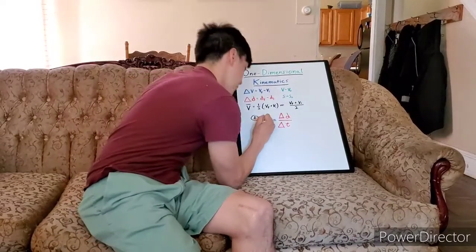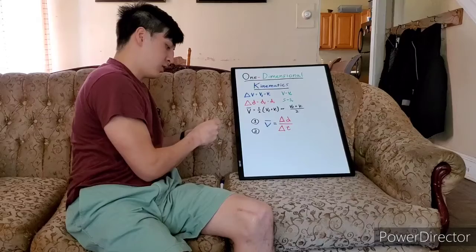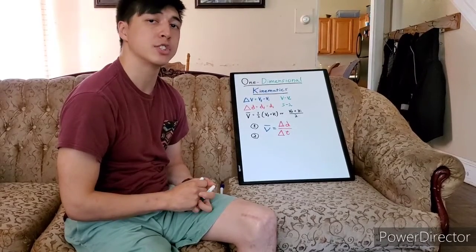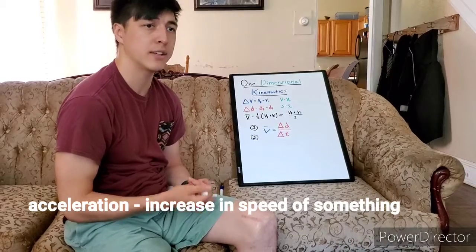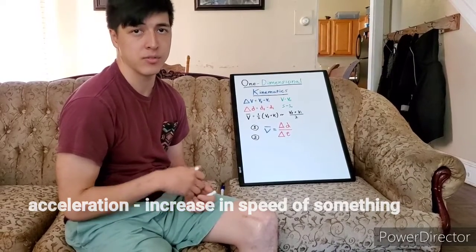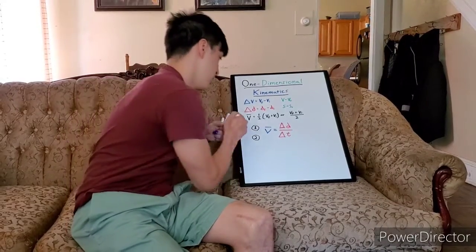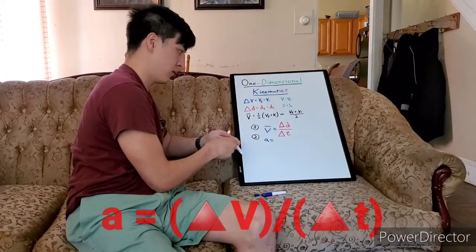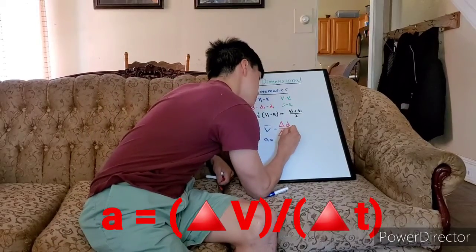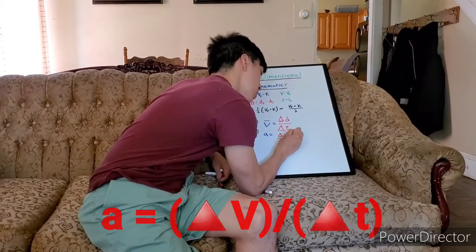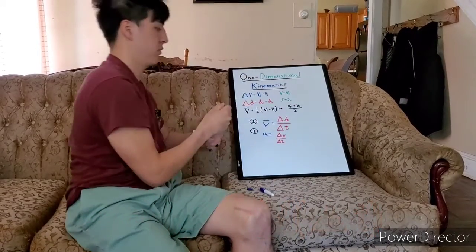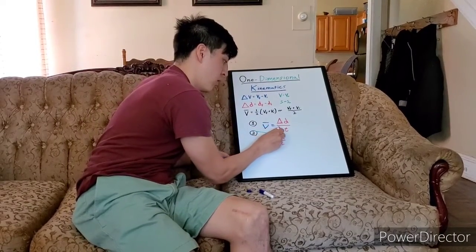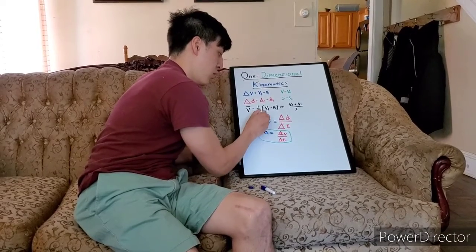Now let's talk about our definition for the second equation. Our second equation is going to be acceleration. Acceleration means the change of velocity — so if we had a change of velocity within a certain amount of time, that would be acceleration. We denote acceleration with a small 'a', and it equals change in velocity over change in time.